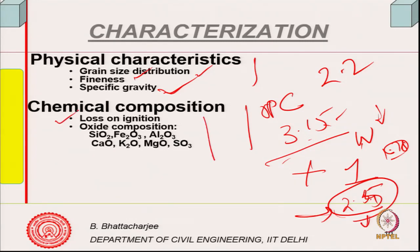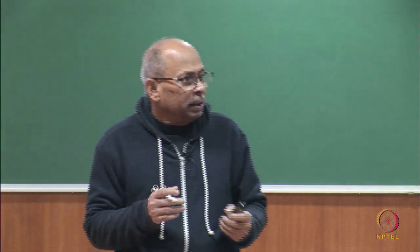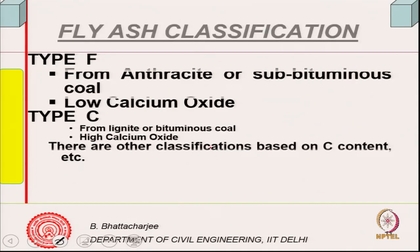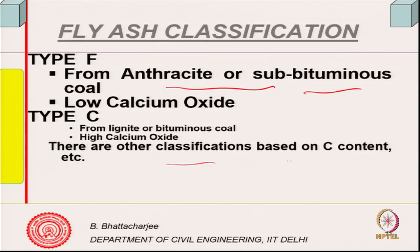Chemical composition is also important. Loss on ignition indicates the carbon content, and carbon is problematic because it is flaky and absorbs water. Oxide composition tells us how much CaO, SiO2, and SO3 are present. Type F fly ash comes from anthracite or sub-bituminous coal, while Type C comes from lignite or bituminous coal. Type C has high calcium oxide and Type F has low calcium oxide, which affects their performance in cement systems. This is the most accepted classification.